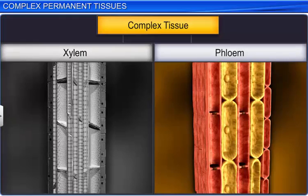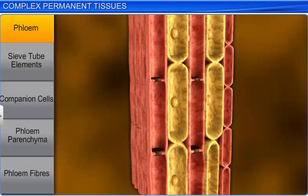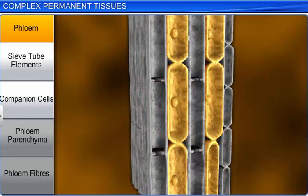The second complex permanent tissue, phloem, transports food materials from the leaves to the other parts of the plant. In angiosperms, phloem consists of sieve tube elements, companion cells, phloem parenchyma, and phloem fibers.